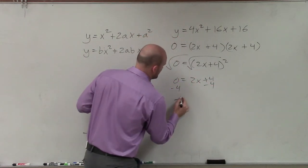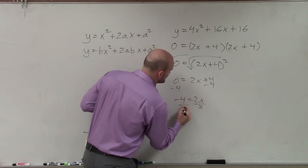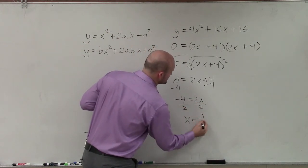Subtract 4. Subtract 4. Negative 4 equals 2x. Divide by 2. Divide by 2. x equals negative 1 half.